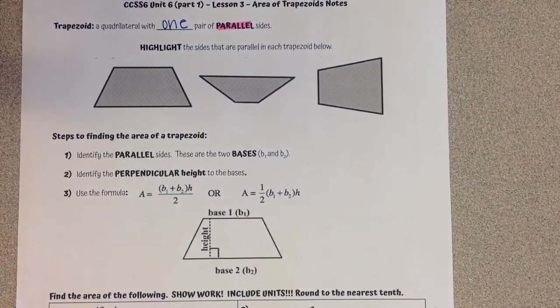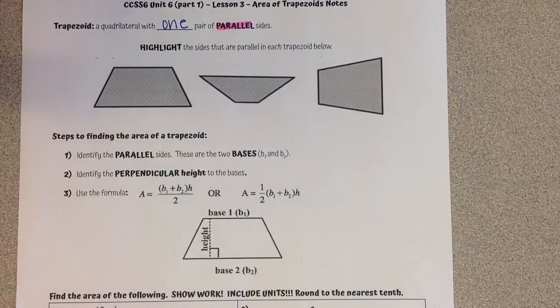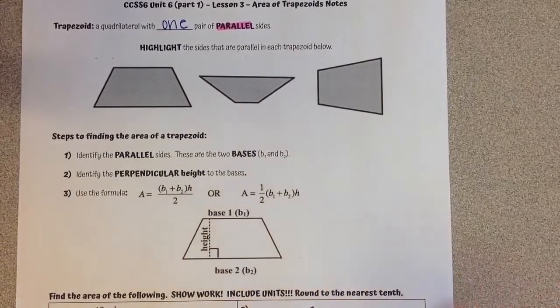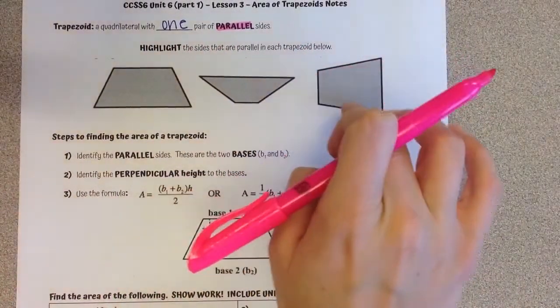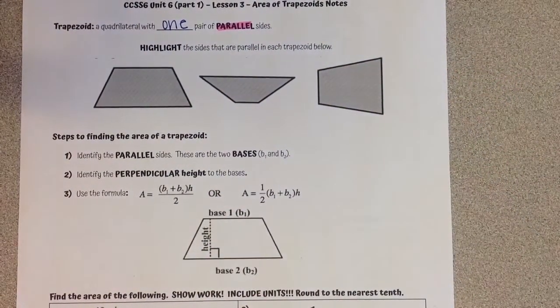Remember that parallel sides are sides that never intersect. If we look at these three examples of trapezoids, remember that it's a quadrilateral, it has four sides—one, two, three, four, one, two, three, four—but there's only one set of parallel sides.